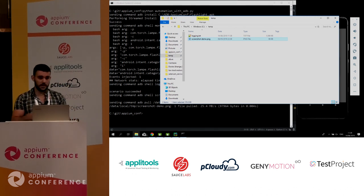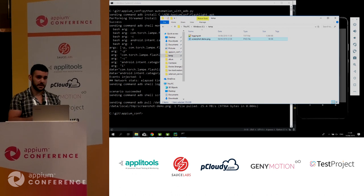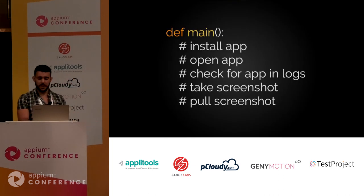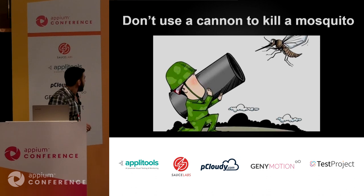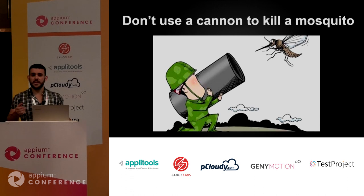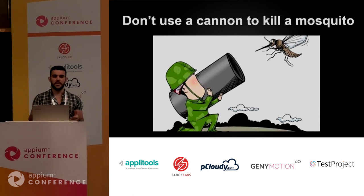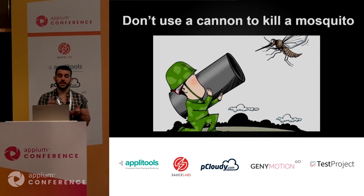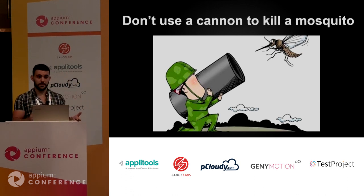To sum up ADB: try not to take a cannon in order to kill a mosquito. Many times we take big tools that are not necessarily the correct tools for us. We should think about whether there's a smaller tool that can perform our task and maybe fit us better — as with the low-level automation tool I created here. Thank you very much.